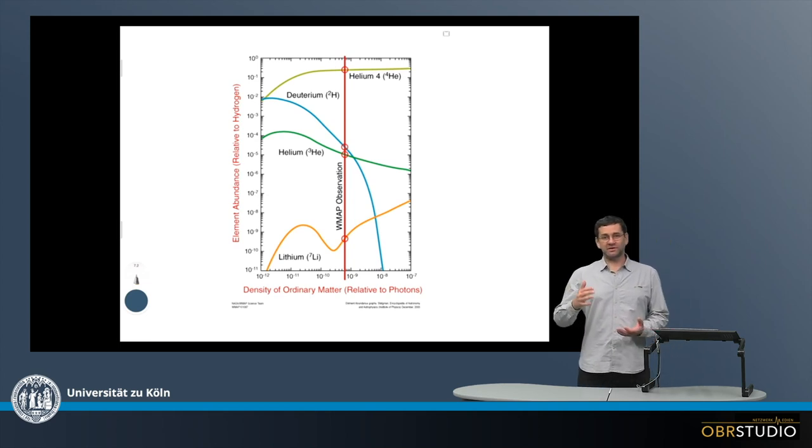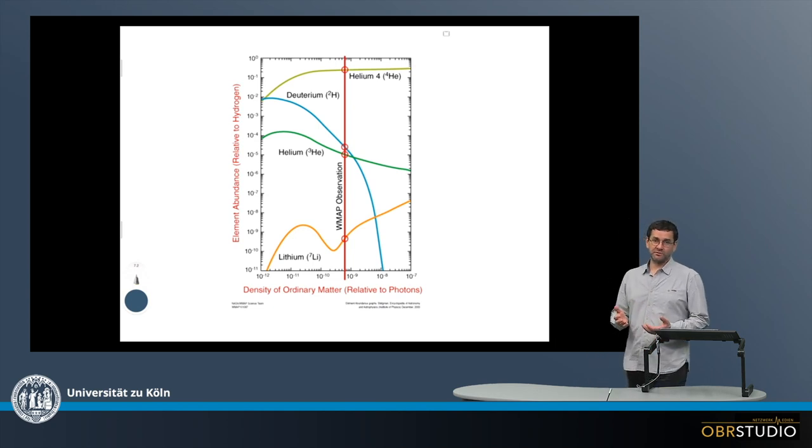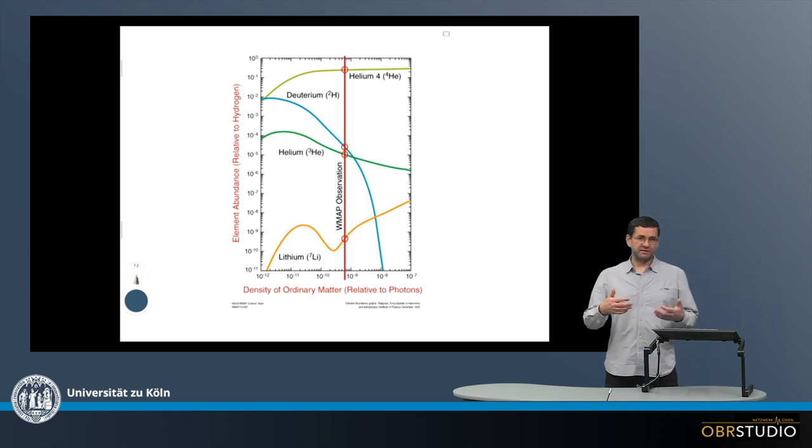Now electron capture by a proton is five times more efficient than formation of helium, which is why there's much more hydrogen than helium. This is why initially there was about 80% hydrogen and about 20% helium.